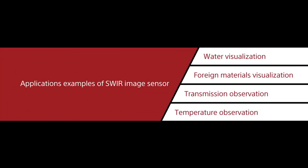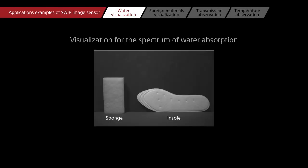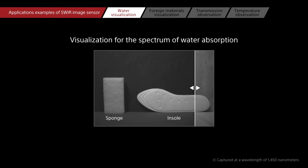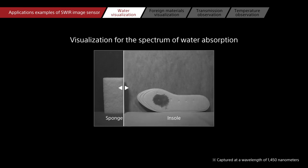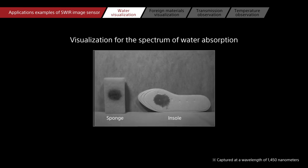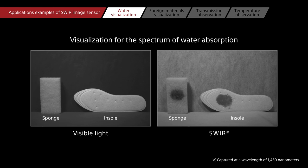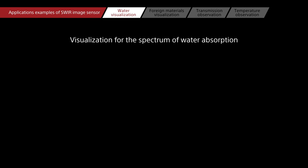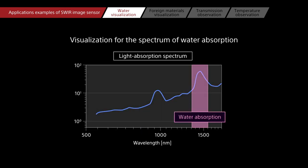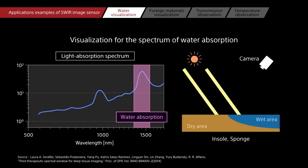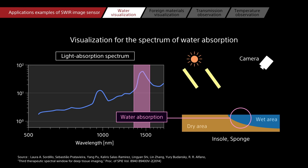Let's look at some applications of SWIR imaging. In SWIR images, wet areas look dark. Since water absorbs light at wavelengths near 1,450 nanometers, reflection is less likely at those wavelengths, so less light reaches the image sensor.